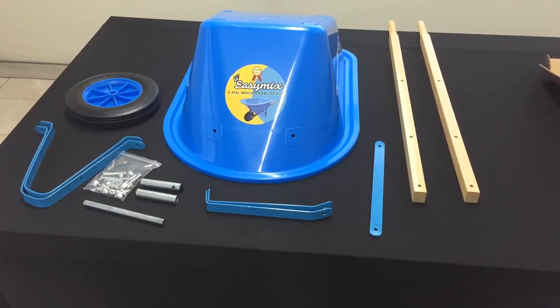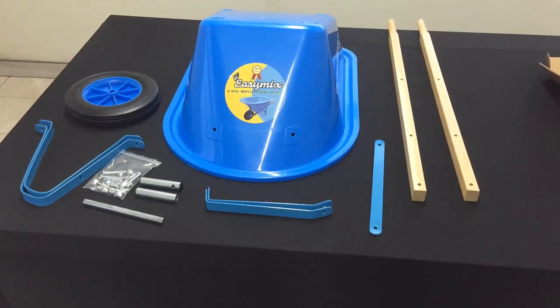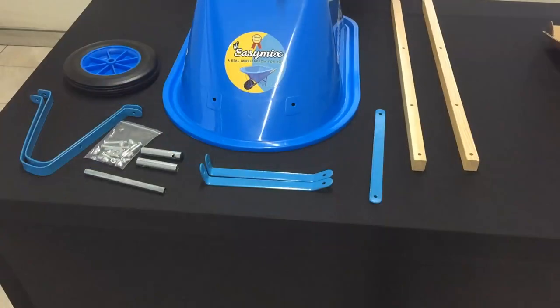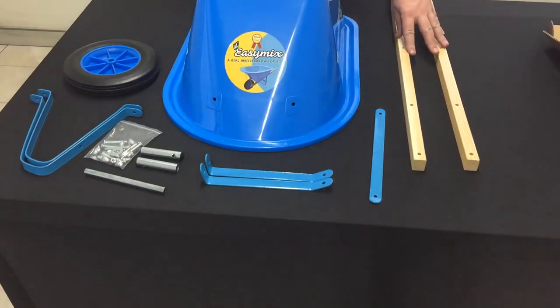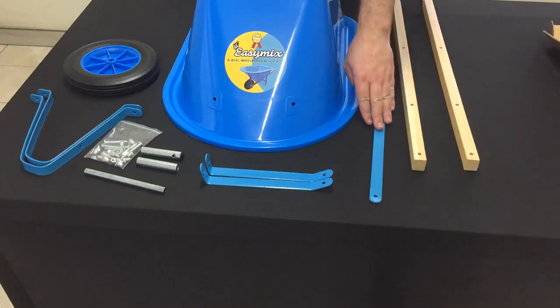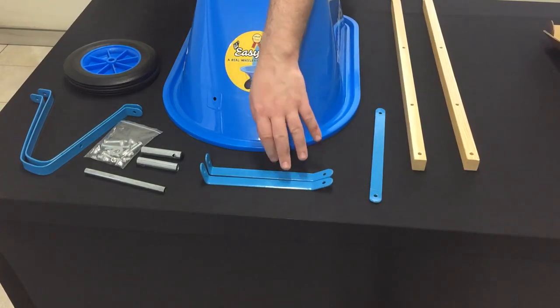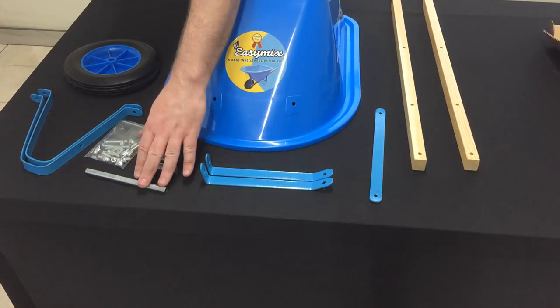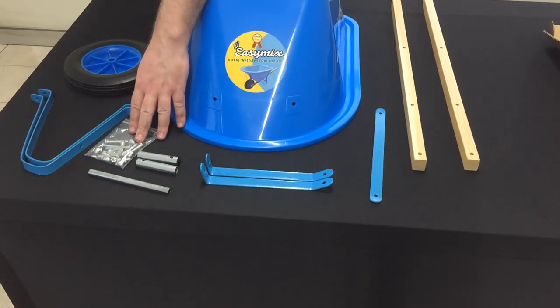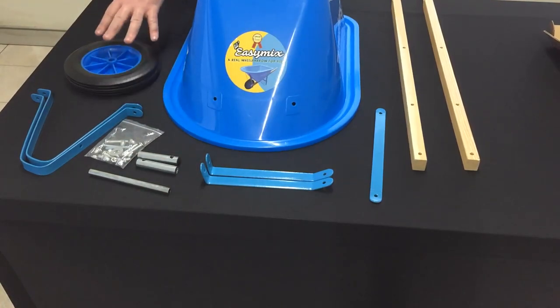The tools we will need today are a 10mm spanner and a screwdriver. Here we have our tray, our wooden handles, our leg support, our upright supports, our axle brackets and axle, the bolt kit, the wheelbarrow legs and the wheel.